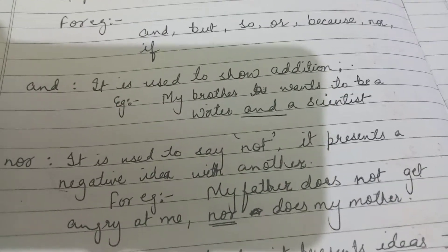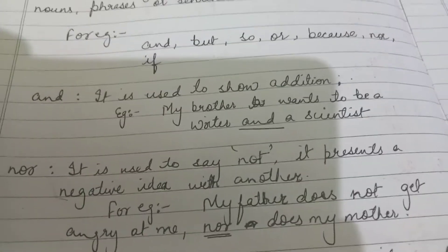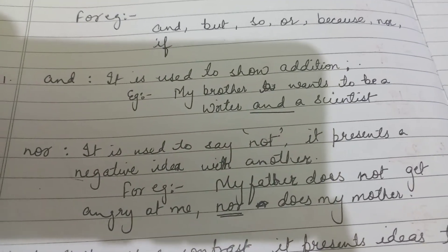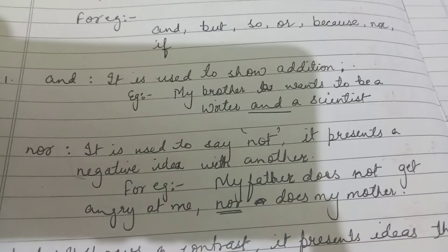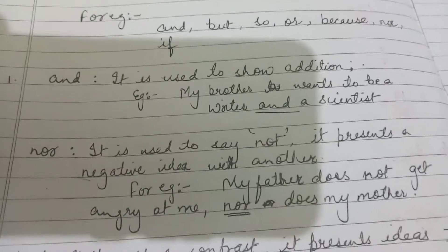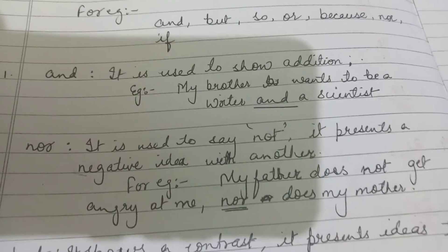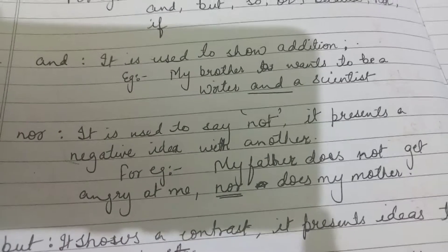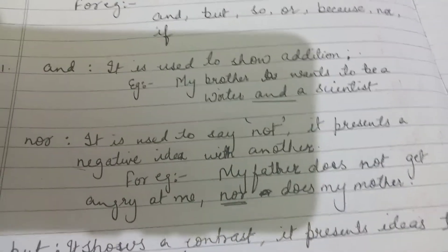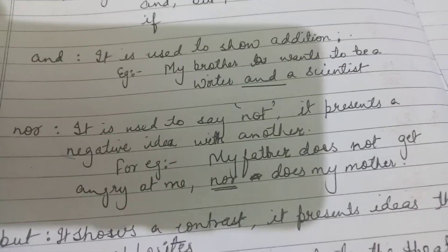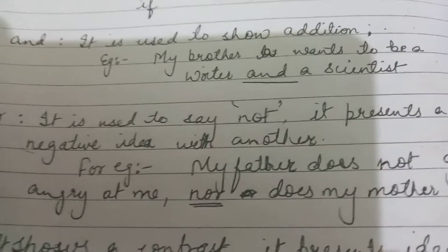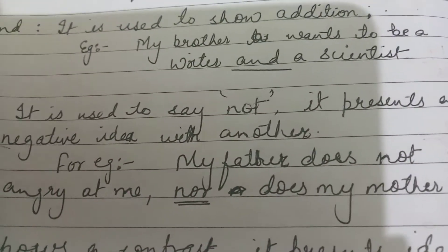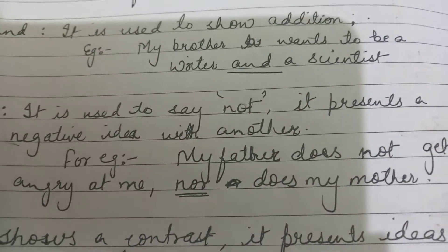Let us take another example. If I want to say 'I like to eat an apple and an egg every day,' instead of saying 'I like to eat an apple' and 'I also like to eat an egg every day,' we have shortened the sentence and used: 'I like to eat an apple and an egg every day.'